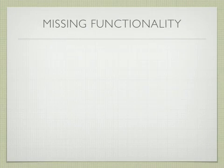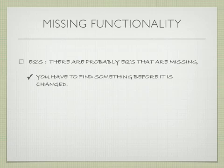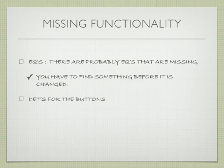When you start counting function points, you're going to find missing functionality. There are probably EQs that are missing — you have to find something before it's changed, so I would imagine there would need to be at least one EQ, probably multiple EQs, to help you find something before you change it. Also, the data entry buttons that kick off the transactions weren't discussed at all. This helps you understand that parts of the application have not been fully defined yet, and function points help you identify that.